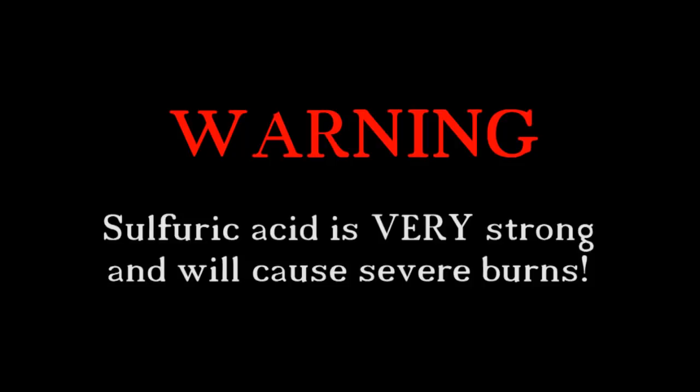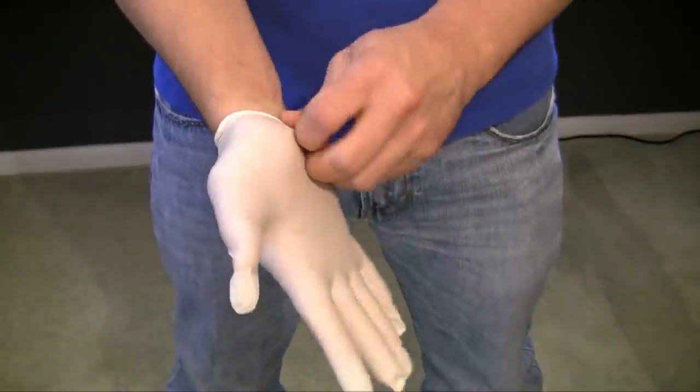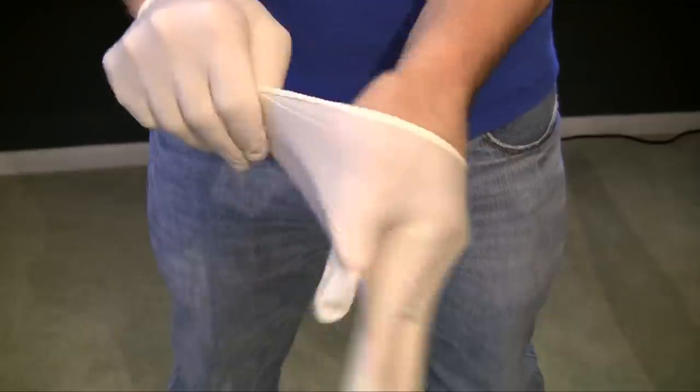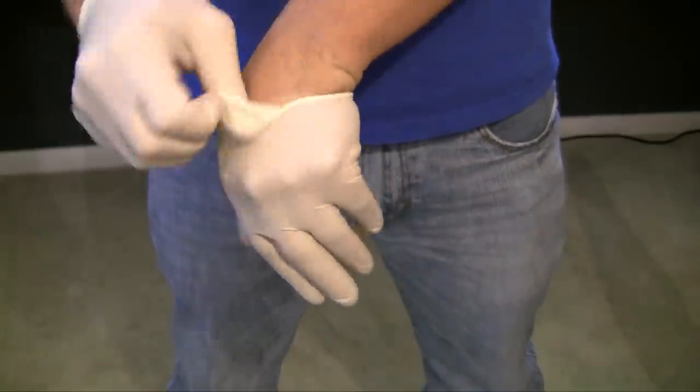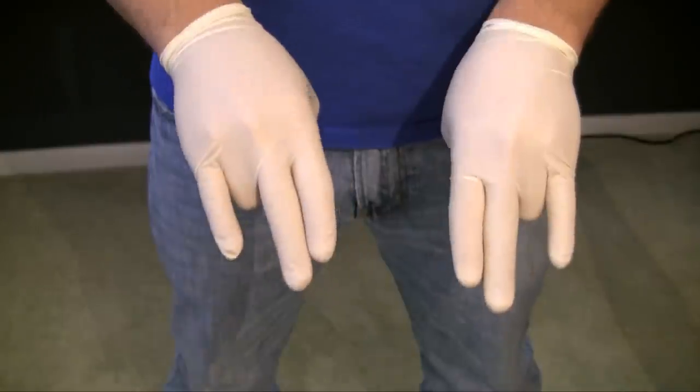Before we start messing around with sulfuric acid, we need to make sure we're safe. The first thing you should do before you start working with it at all, or even handling the bottle, is make sure you have rubber or latex gloves on. Some kind of gloves that fit tight to the skin because this is the most common type of sulfuric acid burn, whenever it gets on your hands.